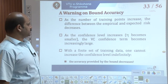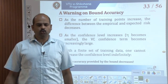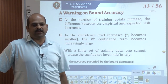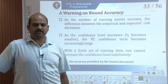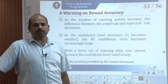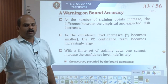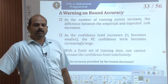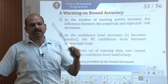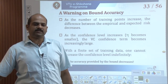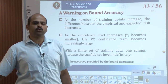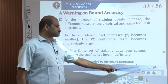A warning on bound accuracy: as the number of training points increases, the difference between the empirical and expected risk decreases and they move closer. On the other hand, as the confidence level increases (epsilon becomes smaller), the VC confidence term becomes increasingly large. This means that with a finite training set, one cannot increase the confidence level indefinitely — as one tries to do so, the accuracy provided by the bounds decreases.